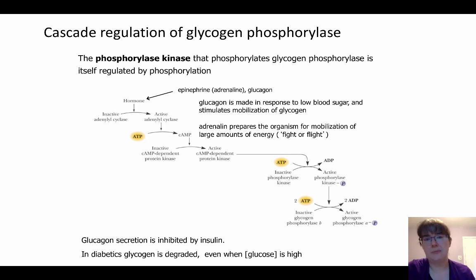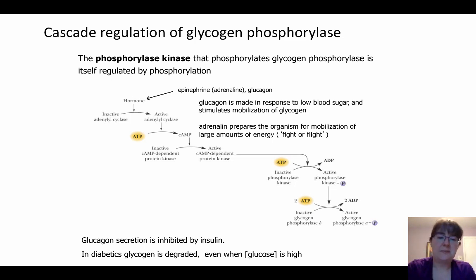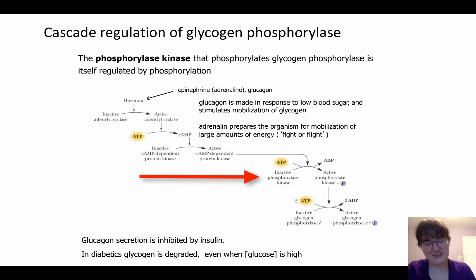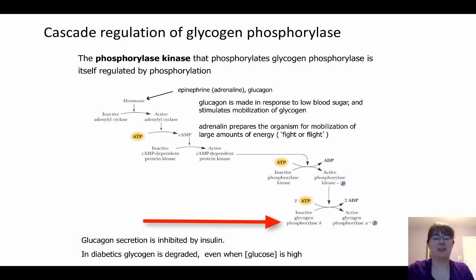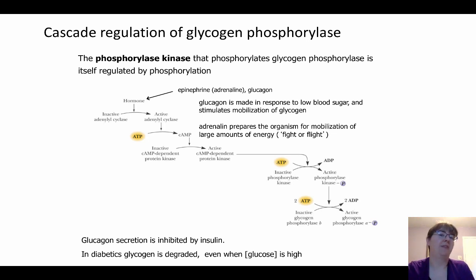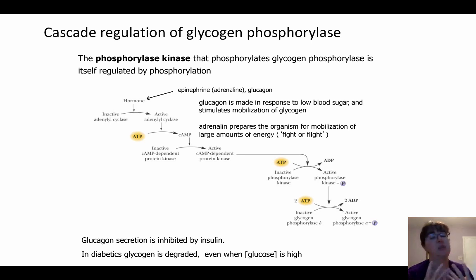cAMP in the cell is a molecule that signals low energy. Once cAMP is present, it activates a cAMP-dependent protein kinase, which then activates phosphorylase kinase by phosphorylation, which then phosphorylates glycogen phosphorylase B into glycogen phosphorylase A. Glucagon is made in response to low blood sugar, signaling that we need more glucose in the blood. Adrenaline is the fight-or-flight signal, preparing the body for action. Glucagon secretion is inhibited by insulin, so in diabetics, glycogen is degraded even when glucose is high.